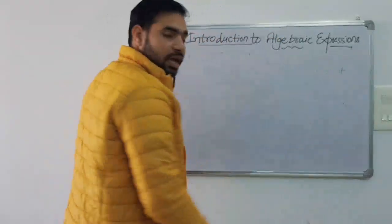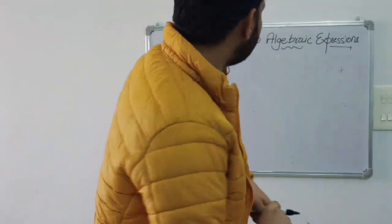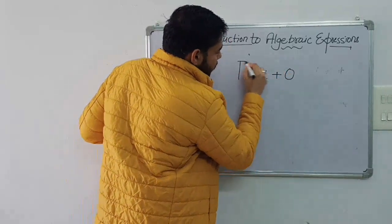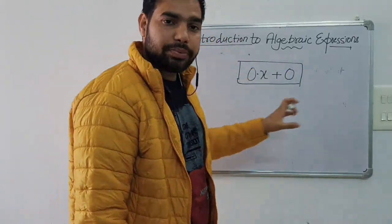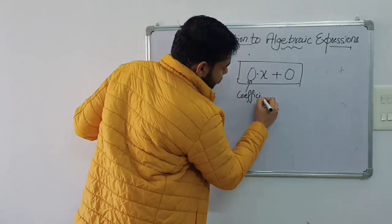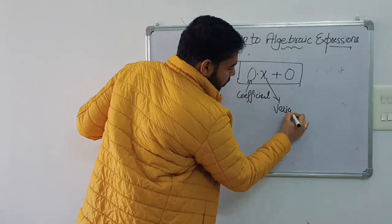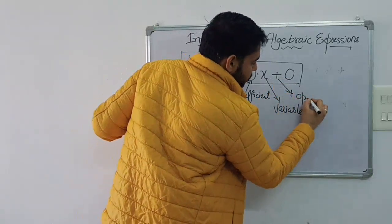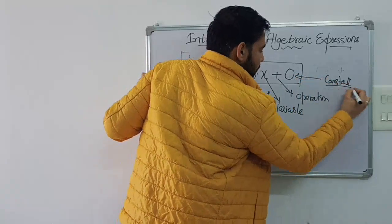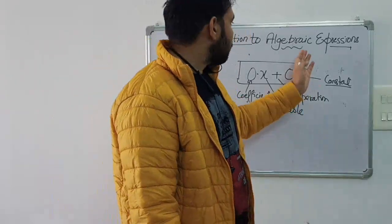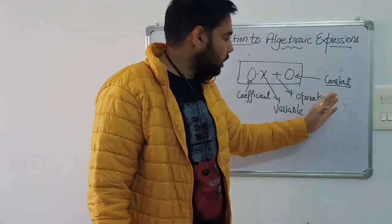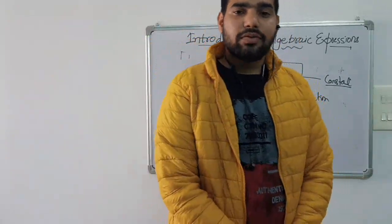Did you know that we can use zero in an algebraic expression? For example, 0 × x + 0 is also an algebraic expression. Here, 0 is acting as a coefficient, x is the variable, + is the operation, and 0 is the constant. All of these fulfill our basic definition of an algebraic expression, which states it must consist of a variable, a constant, and an operation. This is all for today — thank you.